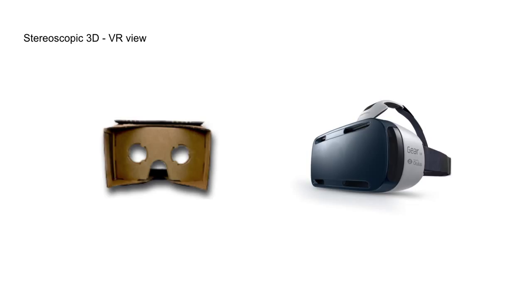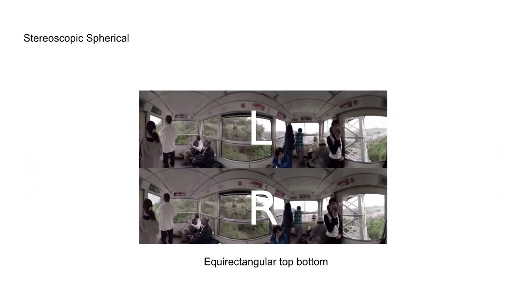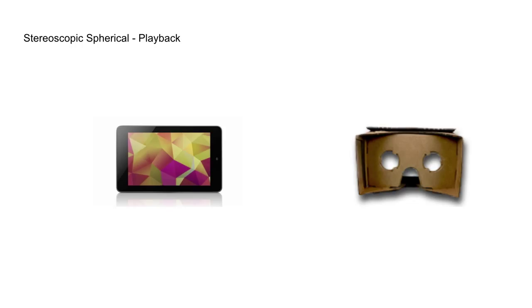Now we mix the two together. We talked about top-bottom, we talked about equirectangular, and we mix the two to get equirectangular top-bottom — that's the most popular way today to represent spherical 3D video. For capture, there's Jump — there's a talk right after this one where you'll learn about that. For playback it's two of the same ideas: there's a magic window mode and a cardboard view, and that's how people will enjoy spherical 3D. We don't support it yet but we do plan to soon.